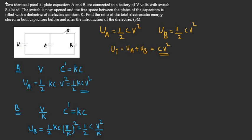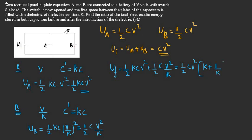This is the electrostatic energy stored in capacitor B. So the final total electrostatic energy stored in both capacitors is: Uf = ½KCV² + ½CV²/K. Taking ½CV² as a common factor, we get Uf = ½CV² × (K + 1/K). This is the final energy stored.